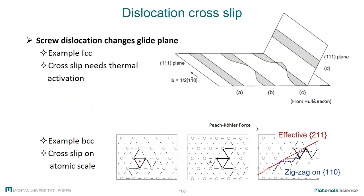The second mechanism is specific to screw dislocations. Screw dislocations may be dissociated on a glide plane — shown here for a screw dislocation in FCC, where we have a stacking fault and bounding Shockley partials. A screw dislocation has the specific property that it can change its glide plane, which is called cross-slip, as shown in this schematic.